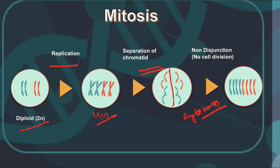The chromosome number changes from 2n to 4n, producing a tetraploid condition. This is the tetraploid condition because the total chromosome set has 4 copies present.